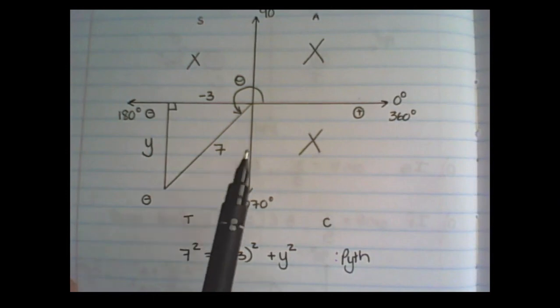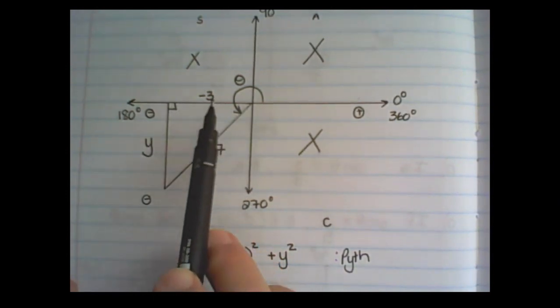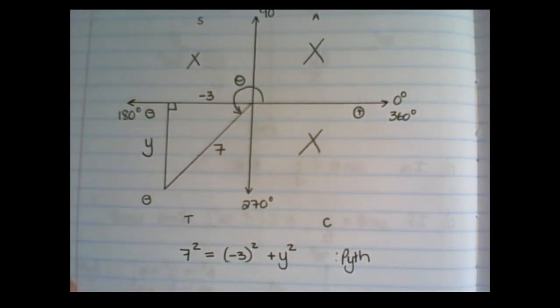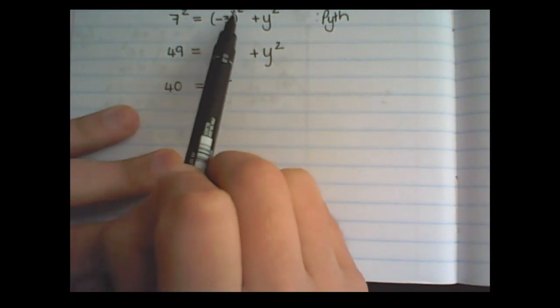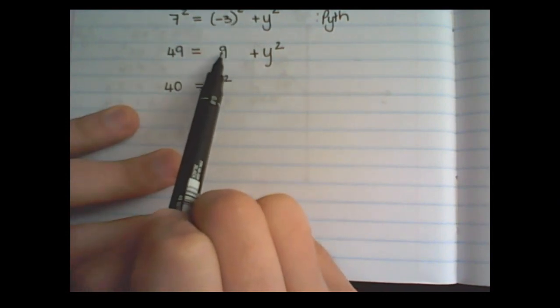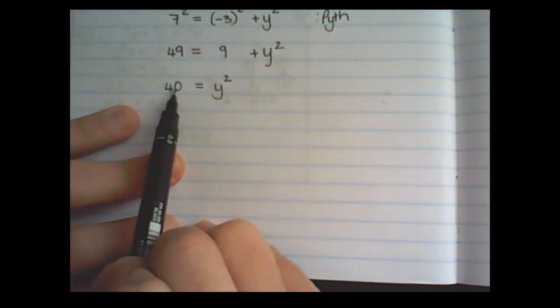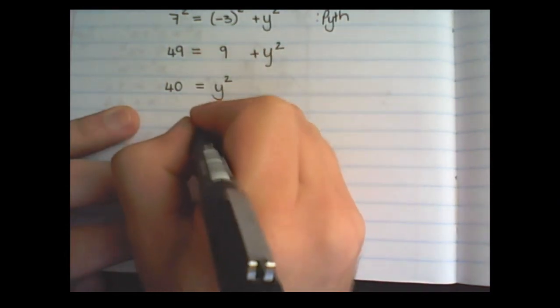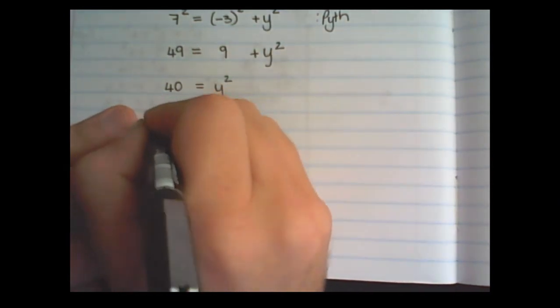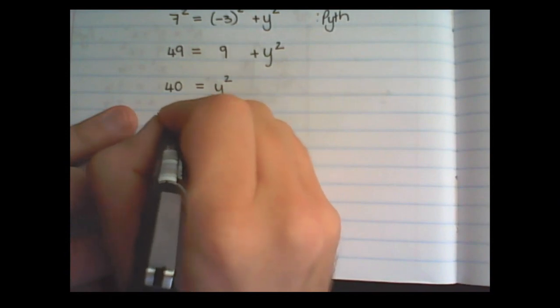Now I can use the diagram which I have drawn to solve for y. And I solve y by using Pythagoras. So 7² is equal to (-3)² plus y². 7² is 49. Negative 3 squared is 9. And then I move the 9 over. So 40 is equal to y². Therefore, y is plus or minus the square root of 40.